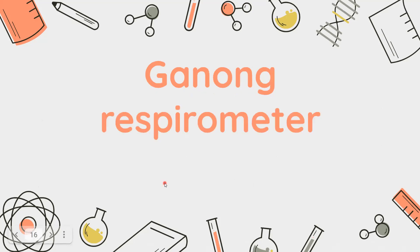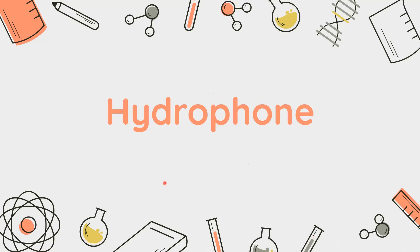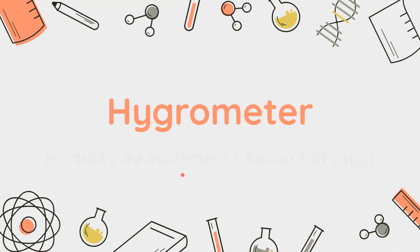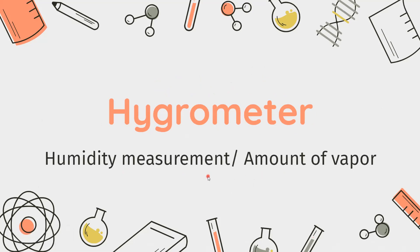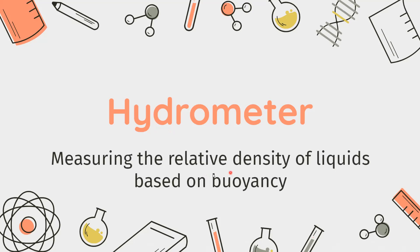Next is the respirometer, which is used to calculate the respiratory coefficient. Next is the Hydrophone, used to calculate the sound of waves inside the water. The Hygrometer is used to measure humidity or the amount of vapor. The Hydrometer is used to calculate the relative density of liquid and is based on the principle of buoyancy.